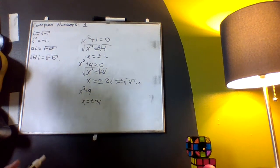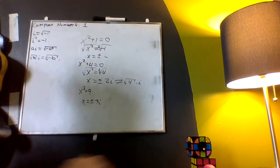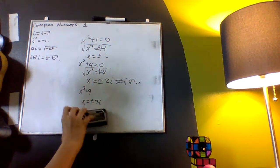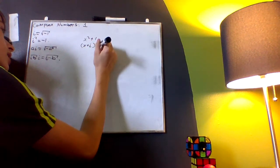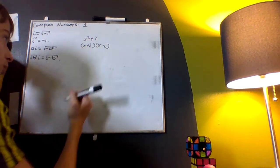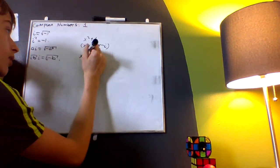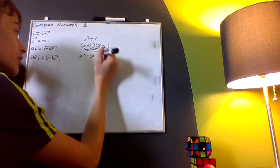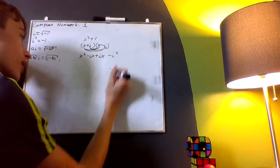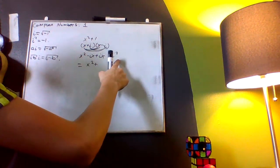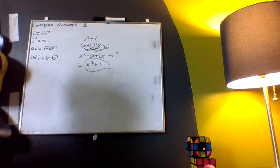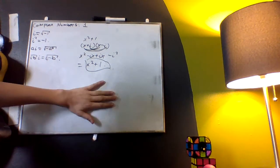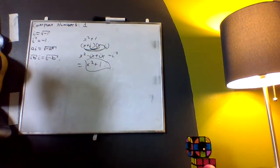Now you can actually factor all of these — all these things your teacher said you couldn't factor, you can factor every single one. How would you factor x squared plus one? You factor it as (x plus i)(x minus i). To check: x times x is x squared, x times negative i is negative ix, i times x is ix, and i times negative i is negative i squared, which equals negative of negative one, which is one. So you get x squared plus one. It works.